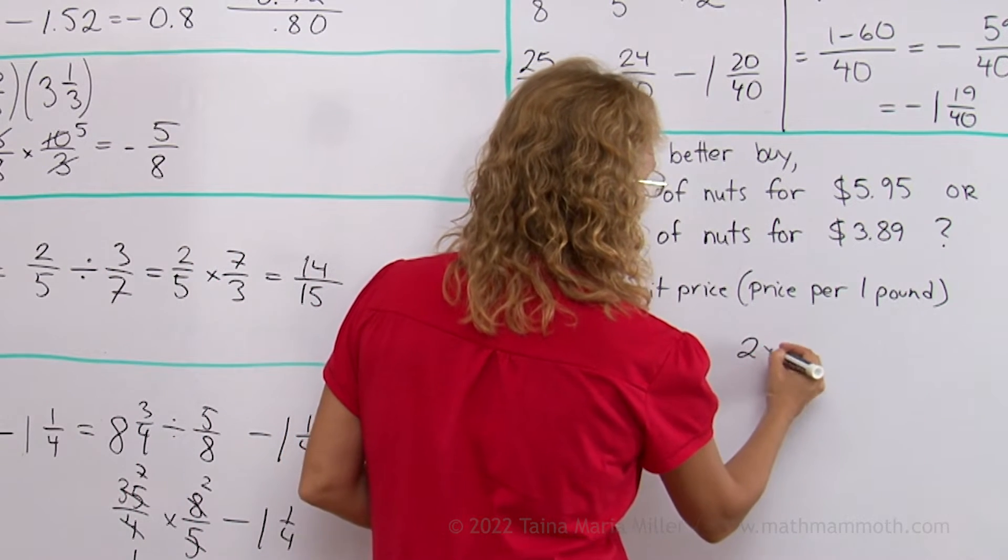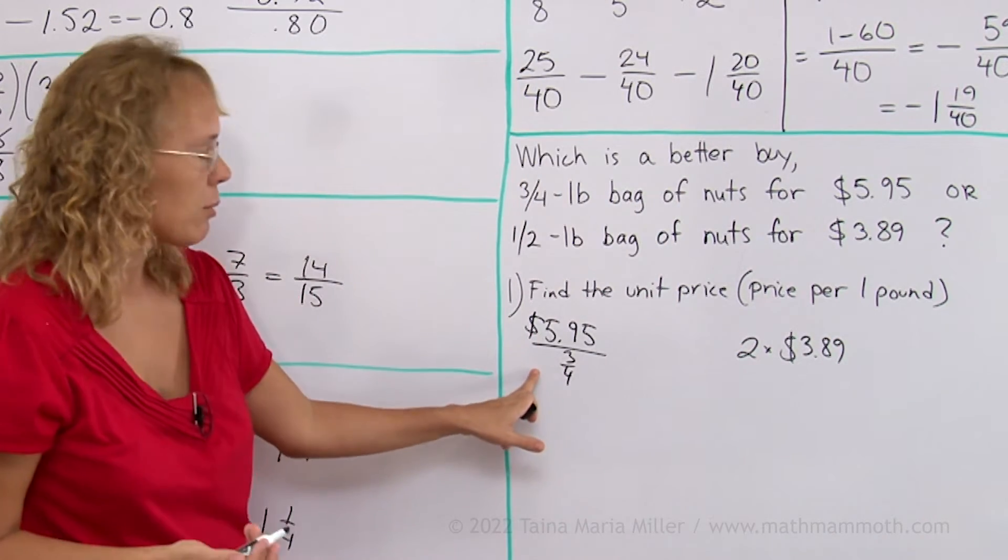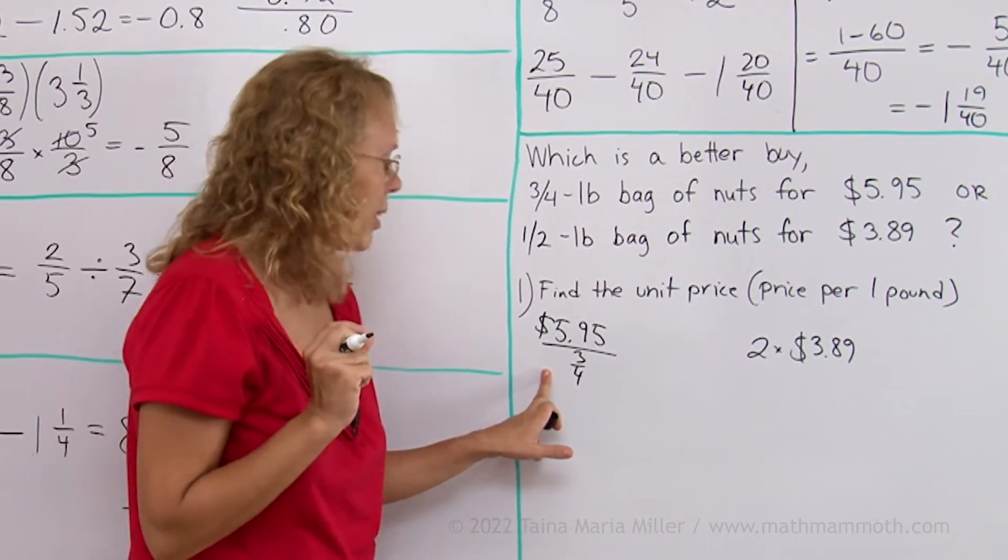So the other one we would get this 2 times $3.89. Now this one here, being a complex fraction...